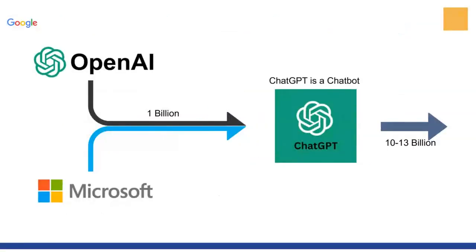We are going to go through great changes. What happened was Google had AI technology, and OpenAI went to Google and said they weren't really using it and asked if they could have it. Google said yes — big mistake. OpenAI then had this technology, went to Microsoft, and they agreed to invest 1 billion dollars, which created ChatGPT.